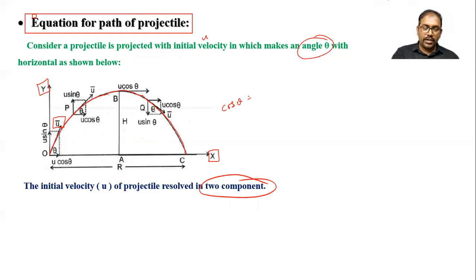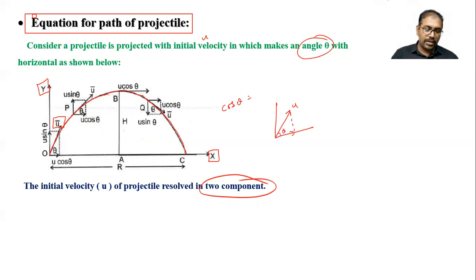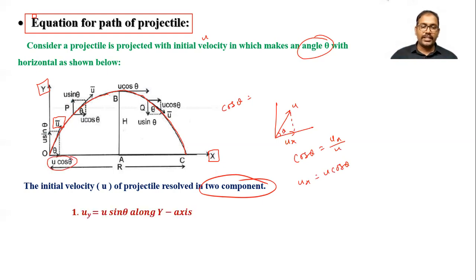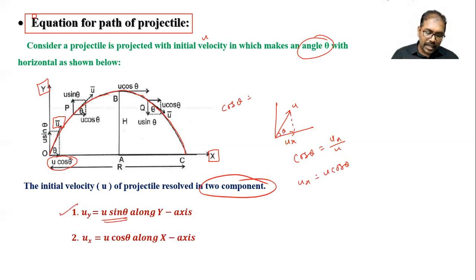You know that cos theta is the adjacent component divided by the hypotenuse. If the initial velocity is u and the angle is theta, then the adjacent component is u_x, and the hypotenuse is u, so cos theta equals u_x divided by u. Therefore, the x-component u_x equals u cos theta, as written here.